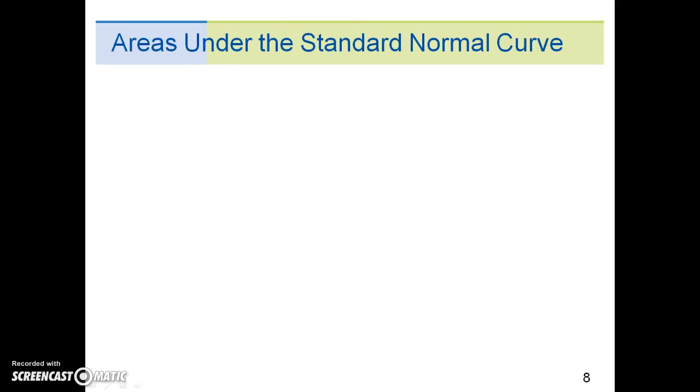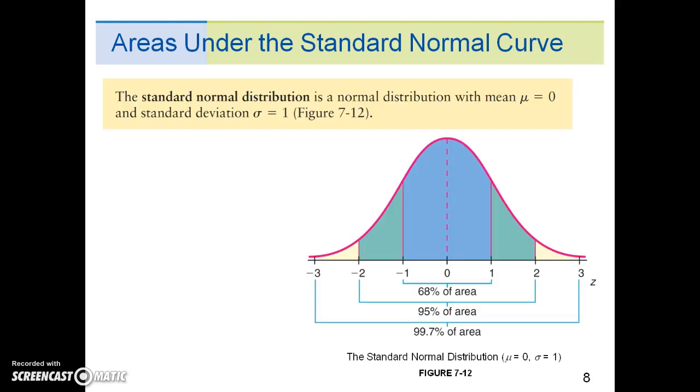Standard units need a standard normal distribution. The standard normal distribution is a normal distribution with mean μ = 0 and standard deviation σ = 1, as shown in the figure below.